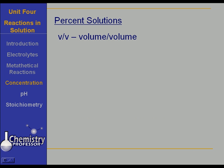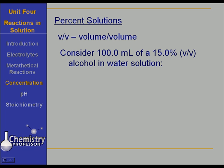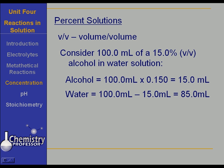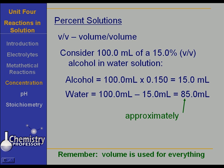Now let's look at volume-volume solutions. Volume-volume solutions are classically solutions made of two liquids. Suppose you have a hundred milliliters of a fifteen percent V/V alcohol and water solution. You take a hundred milliliters times fifteen percent, which gives you fifteen milliliters of alcohol, and then you add enough water to come up to a hundred milliliters of solution. Volume is used for everything.